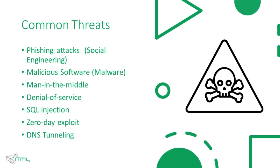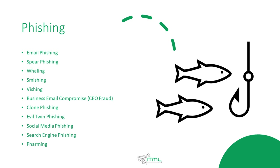A list of common threats includes phishing attacks, which are a form of social engineering — it's called social engineering because it uses human weaknesses to exploit them and retrieve information. There is also denial of service, SQL injection, zero-day exploit, and DNS tunneling, which are mostly used to attack internet-based services and make them stop providing that service. As a victim, there is not much you can do for these four threats, and SQL injection can also expose some of your data. So we are going to focus mostly on phishing attacks.